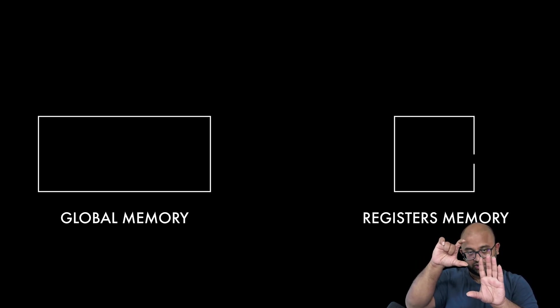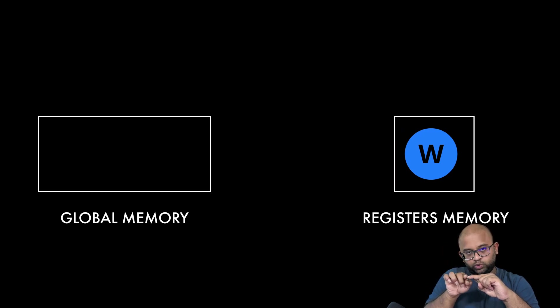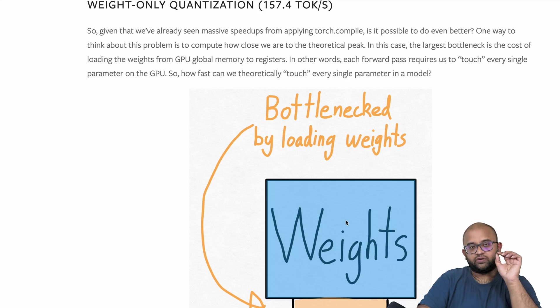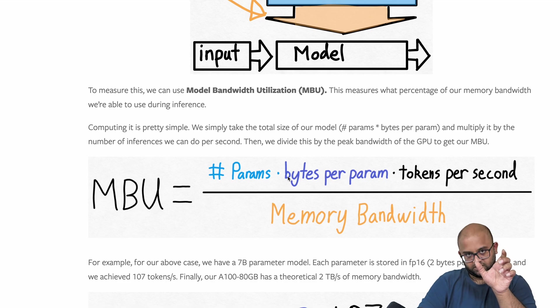The second most important thing the PyTorch team did is using quantization. When we predict a token using a transformer, input tokens go into transformer weights stored in GPU memory, and the transformer block generates an output. Inside the GPU there are two kinds of memory: global memory (in this case 80 GB) and register memory. The model weights required for each operation are copied from global memory to register memory. The key variable in making it faster is reducing the bytes per parameter.